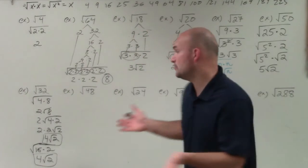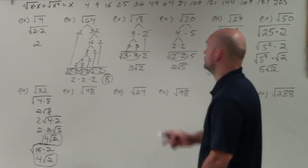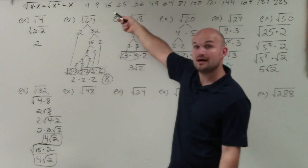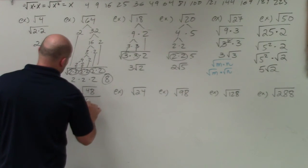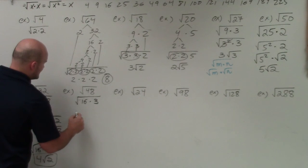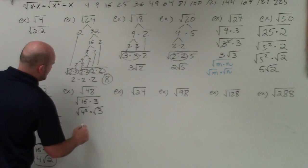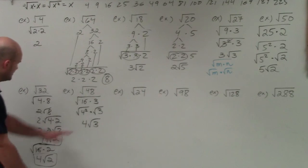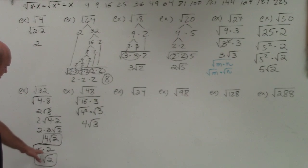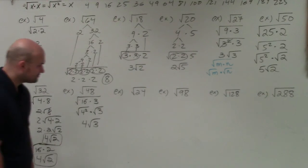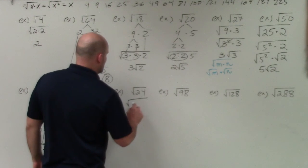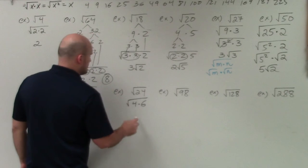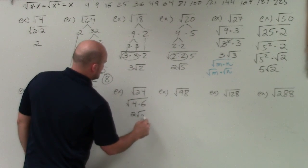The same approach applies to √48. What is the largest perfect square that goes into 48? It's 16. How many times does 16 go into 48? Three times. So √48 = √(16 × 3) = √(4² × 3) = 4√3. For √24, the largest perfect square is 4, which goes into 24 six times, giving √(4 × 6) = 2√6.